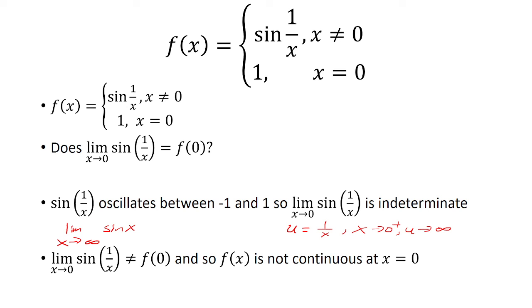And f of 0 is equal to 1, because that's when it's defined. So indeterminate is not equal 1, therefore the function is not continuous at x equals 0. And that is the only point where it's discontinuous.